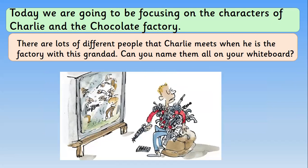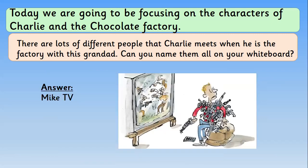This character loves to watch TV, and his last name is actually TV — that's a big clue! He ends up actually going inside the TV. Quentin Blake has drawn him brilliantly; he seems to have loads of weapons, and he seems to be watching some violent TV where people are shooting each other. He loves to play lots of video games. Well done if you got Mike TV — he is absolutely obsessed with watching TV and playing video games.